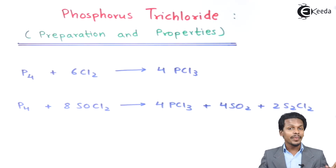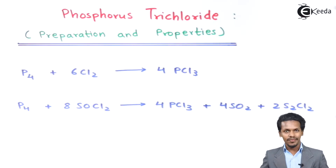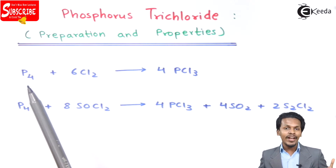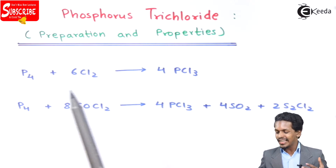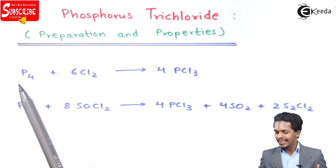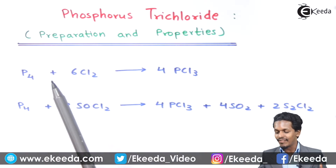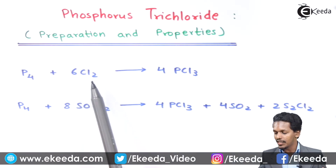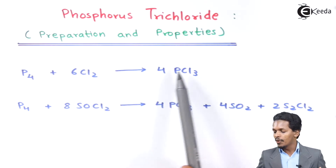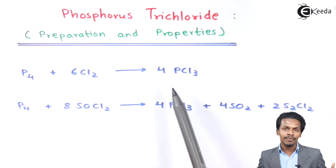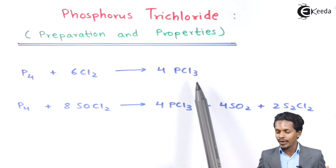Let us start with the preparation of phosphorus trichloride. P4, that is white phosphorus, whenever it is reacted with chlorine — P4 reacted with 6 moles of Cl2 — it will form 4 moles of PCl3, that is phosphorus trichloride.